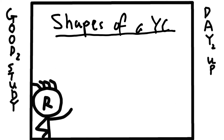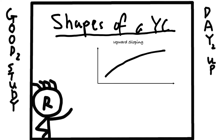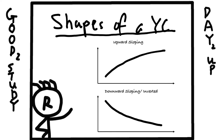There are typically two types of yield curve shapes. First, we have the upward sloping that looks like this. Then, we have the downward sloping that looks like this one.